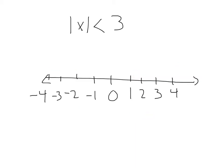In this problem, we have absolute value of x is less than 3. This means that x is less than 3 spaces from 0. So first let's find out where 3 spaces from 0 are. We've got 1, 2, 3 on this side. I'm going to put an open dot, because we don't have the equal to sign. And we have 1, 2, 3 spaces on this side. And we are less than 3 spaces.